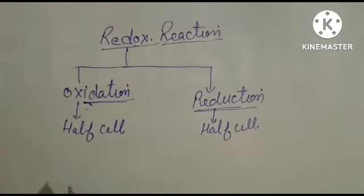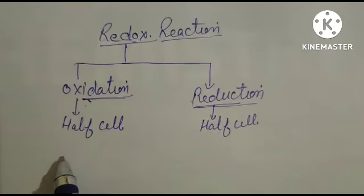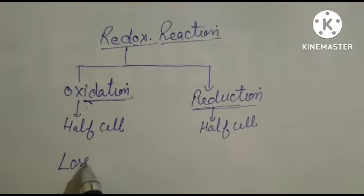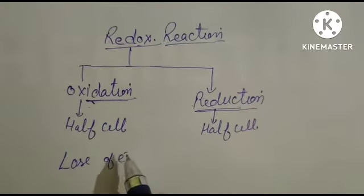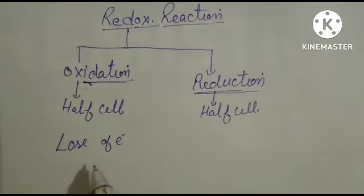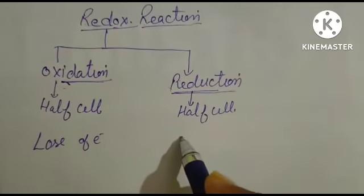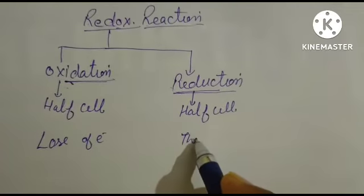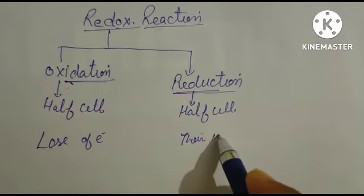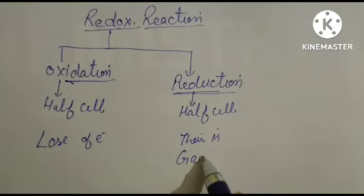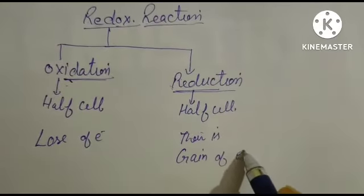For oxidation, there is a loss of electrons during a chemical reaction. In reduction, there is gain of electrons.